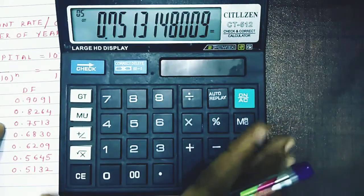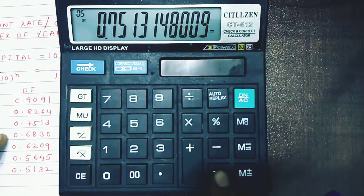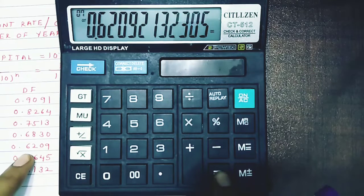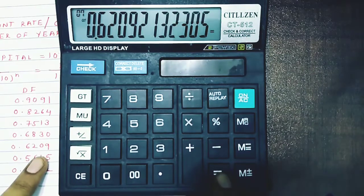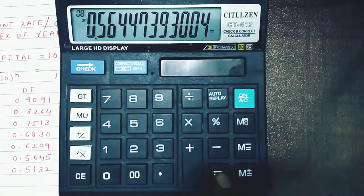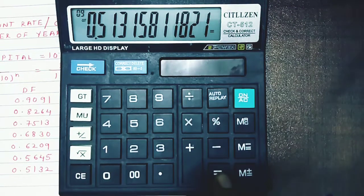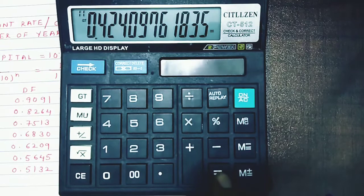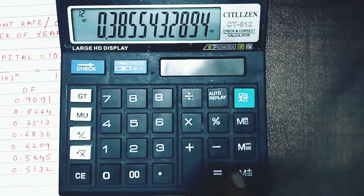For the fourth year, press equals. For the fifth year, press equals. You can compute the discounting factor for unlimited years this way. It's very easy—you just keep pressing equals.